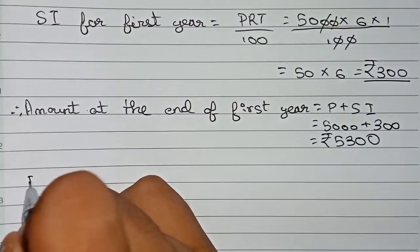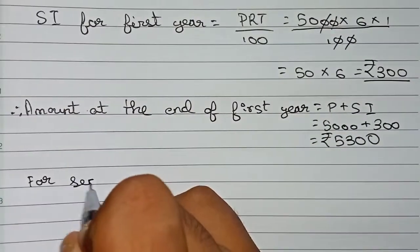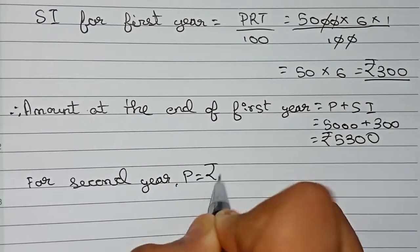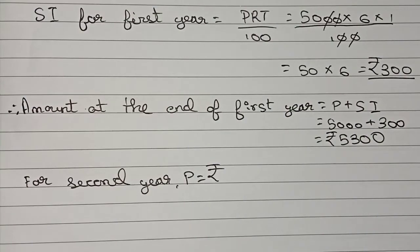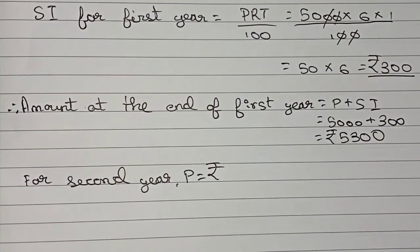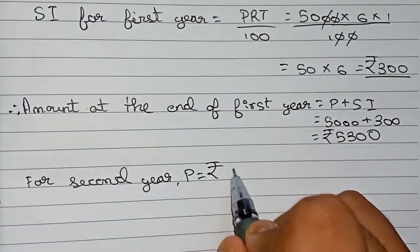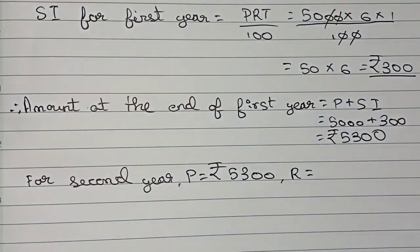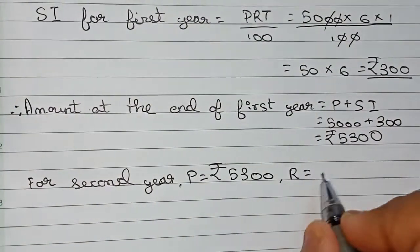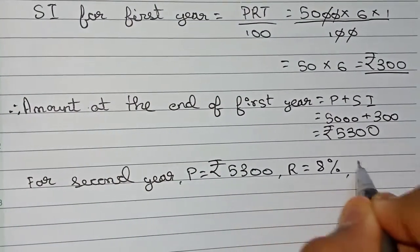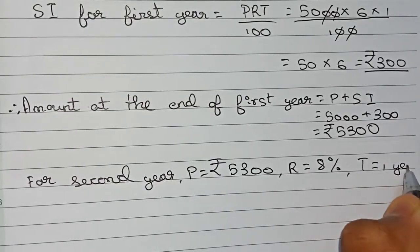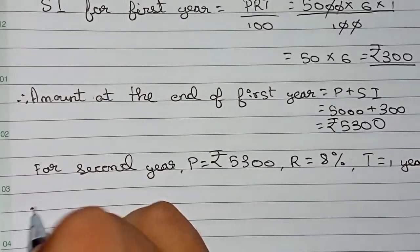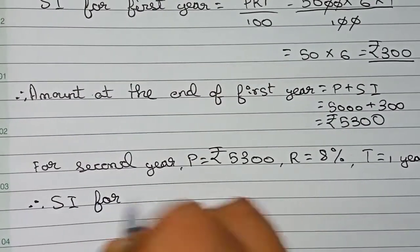For the second year: the amount at the end of the first year, that is rupees 5300, will become the principal for the second year. So principal equals rupees 5300, rate equals eight percent as given in the question, and time is one year.